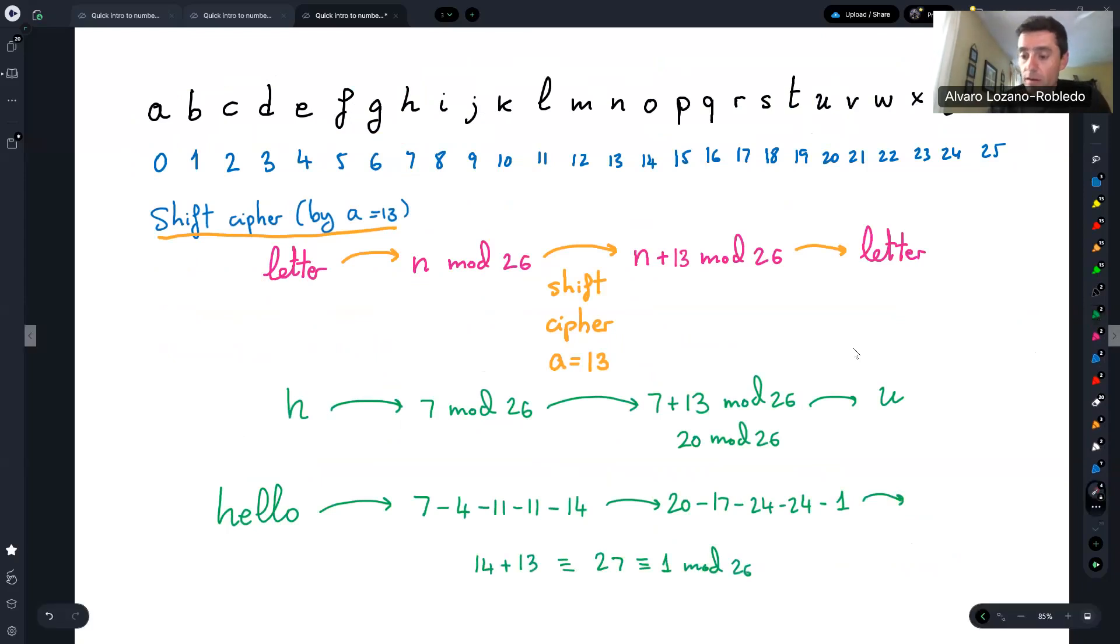So 20, where's 20? 20 corresponds to the letter U. So I get U. 17 corresponds to the letter R. 24 will correspond to the letter Y and another Y, and one corresponds to the letter B. So my word now is translated to U, R, Y, Y, B. And that is my encoding.